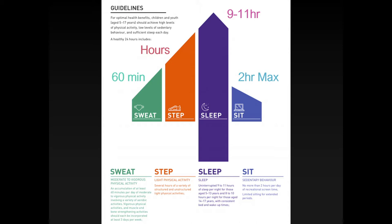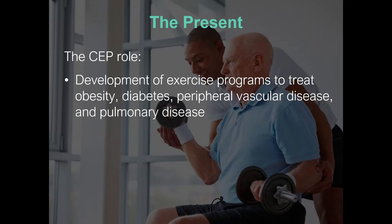It's the CEP's job to interpret these guidelines and be the conduit — the point of contact — between the general public and what governing bodies say is appropriate. The CEP is the go-between: they develop exercise programs, help motivate individuals, help them adhere to a program that helps reduce or reverse various chronic conditions. Specifically, some chronic conditions are obesity, diabetes, vascular disease, pulmonary disease, and heart disease — though this is not an exhaustive list because the scope of practice for CEPs is not well defined.